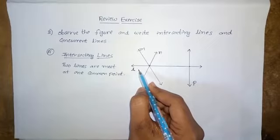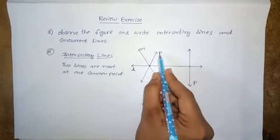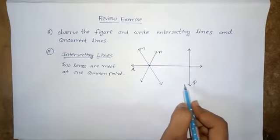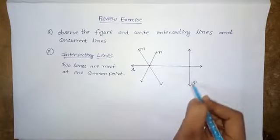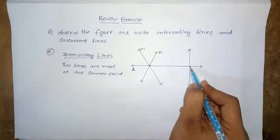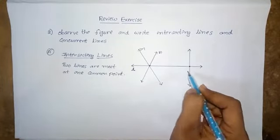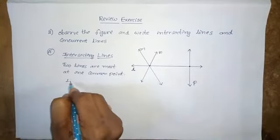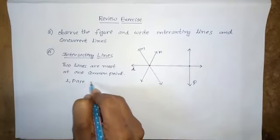In this diagram, the total lines are L, M, N and P — four lines altogether. Line L and line P are meeting at a common point, so these two lines are called intersecting lines. Lines L and P are intersecting lines.